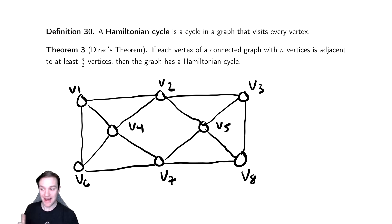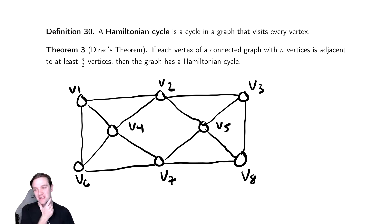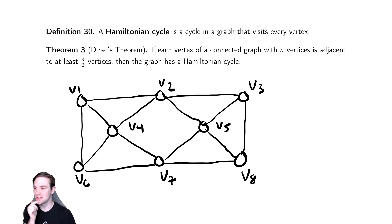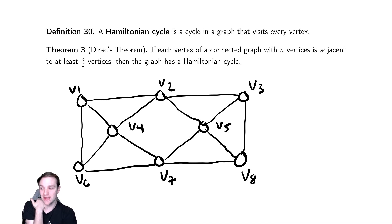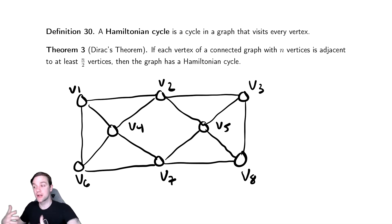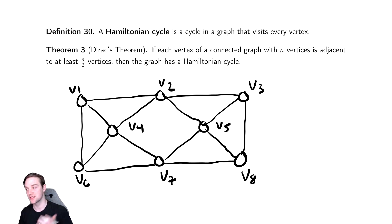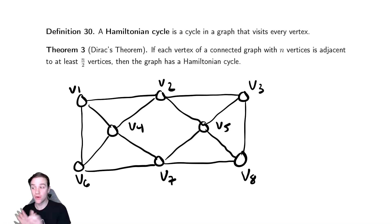This looks benign. However, if you look at the theorem we have, it says if each vertex in a connected graph is adjacent to at least n over 2 vertices, then the graph must have a Hamiltonian Cycle. That is not a great condition — it requires your graph to be almost complete, where every single vertex is touching half of the other vertices. In practice, that's never going to happen.